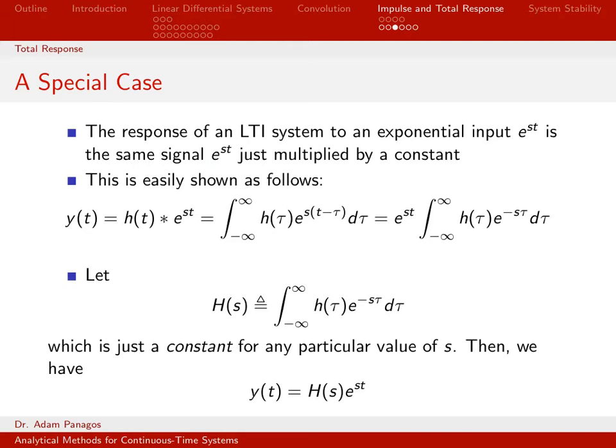So I guess what I'm saying here is that if you're lucky enough to have an input that has this form, you really don't have to do convolution in your zero state response computation because you know that the output is going to be the input just multiplied by a number. So let's talk through that a little bit more carefully. Normally what we would do given the input e to the st is we would convolve it with the impulse response to get the output y of t.